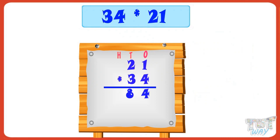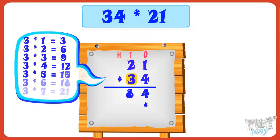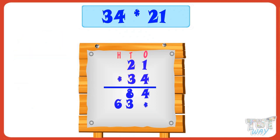Now put a multiplication sign below the ones place digit of the product. Now multiply 21 with the tens digit, that is 3. 3 multiplied by 1 equals 3. Write 3 in the product at tens place. 3 multiplied by 2 equals 6. Write 6 in the product at hundreds place.